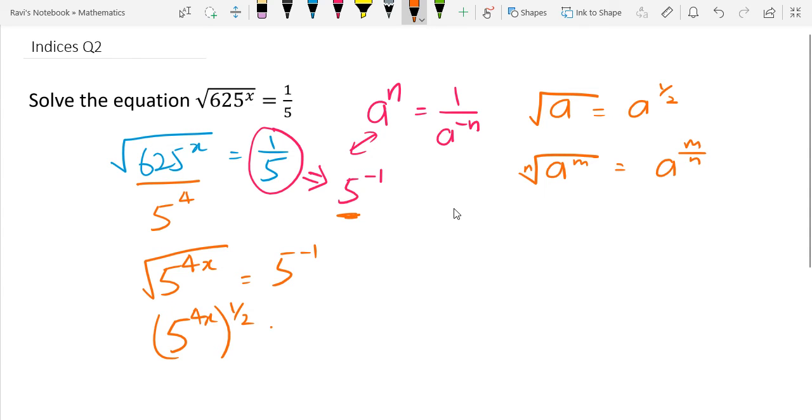This equals 5 to the power of minus 1. Okay, so when we remove the bracket here, we get 5 to the 2x.